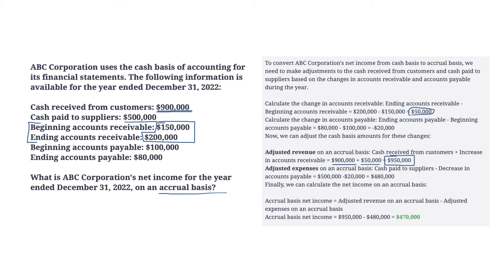We paid out $500,000 of cash and AP goes from $100,000 down to $80,000. To decrease AP — which has a credit balance — you debit it, so we debited AP by $20,000 and credited cash by $20,000. That means $20,000 of the $500,000 isn't actually for current expenses; it's for paying down accounts payable from a prior period. So we subtract $20,000 from the cash payments, giving expenses of $480,000. Accrual basis net income is $950,000 minus $480,000, which is $470,000.